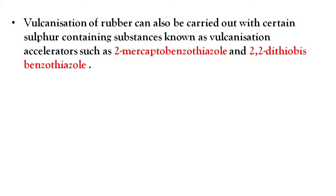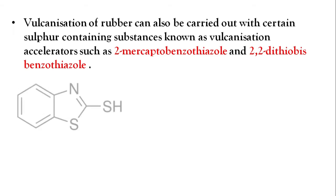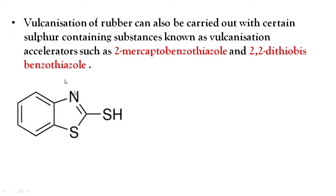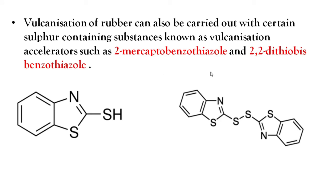Vulcanization can also be carried out with certain sulfur-containing substances known as vulcanization accelerators. Examples include 2-mercaptobenzothiazole and dibenzothiazyl disulfide, which contain a benzothiazole ring with nitrogen.